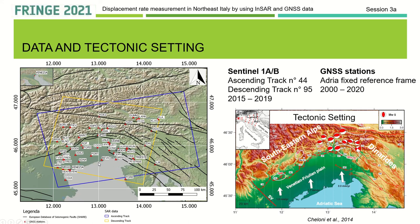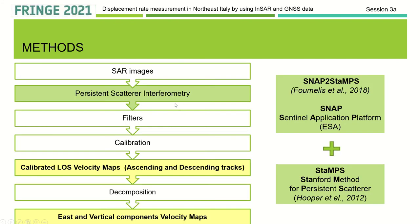We also exploited the presence of GNSS stations in the area, in this case in the Adria fixed reference frame. For SAR processing, we used a Persistent Scatterer Interferometry technique — in particular, we used the scripts provided by SNAP to StaMPS, based on SNAP software and StaMPS. After the interferometric processing, we applied some spatial and temporal filters and also performed the calibration.